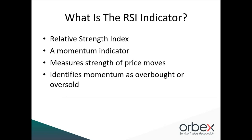The RSI — the Relative Strength Index — is an indicator developed by technical analyst Wells Wilder. It's a momentum indicator, meaning it measures the strength of price moves in the market. It's also a bound oscillator, so it oscillates between a lower and an upper bound. Essentially, the indicator measures the magnitude of gains against the magnitude of losses over a specific look-back period to identify momentum as either overbought or oversold. Its popularity is due mainly to its simplicity.